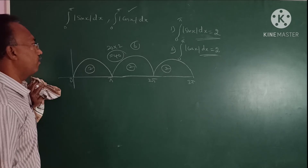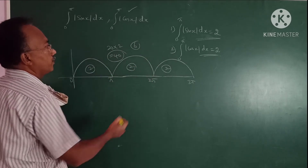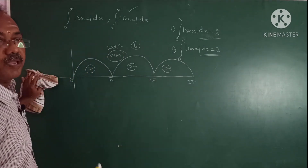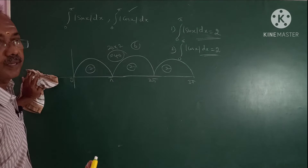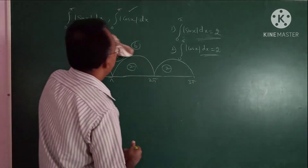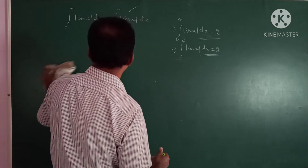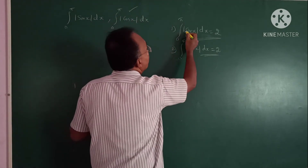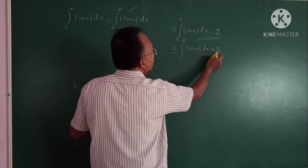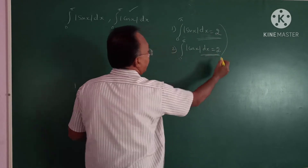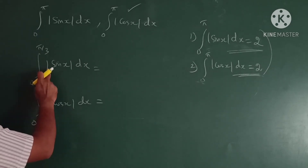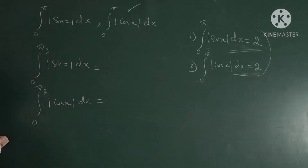Now consider limits like 0 to π, 0 to π/2, 0 to π/4, 0 to π/3. For 0 to π, the integral of modulus sin x dx equals 2. Now we will solve: from 0 to π/3, the integral of modulus sin x times modulus cos x dx.